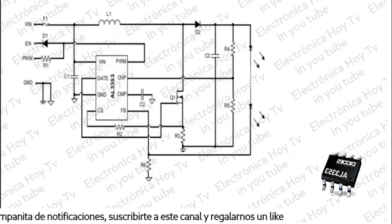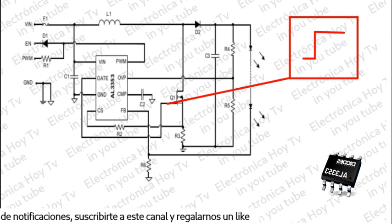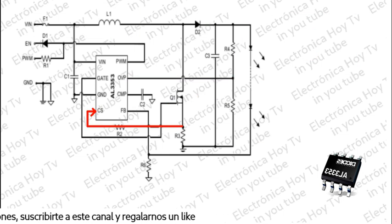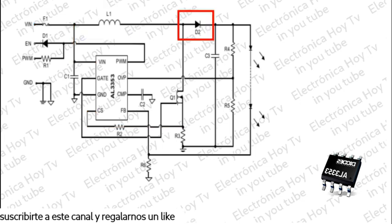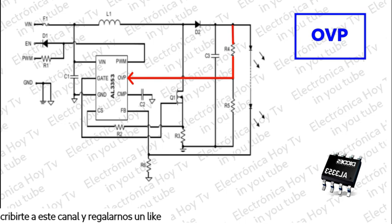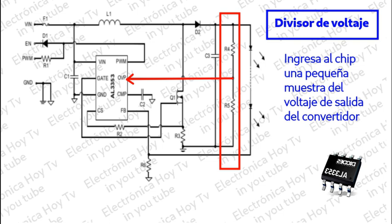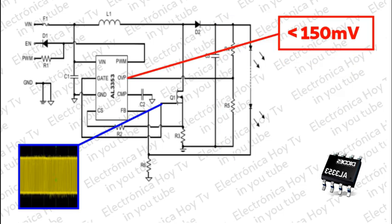Cuando el pulso PWM está activo en nivel alto, el AL3353 verifica primero la conexión de topología. El IC monitorea el pin OBP para detectar si el diodo Schottky está conectado o si la salida tiene corto a GND. Si el voltaje en el pin OBP es inferior a 150 milivoltios, la salida se desactiva.